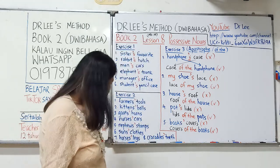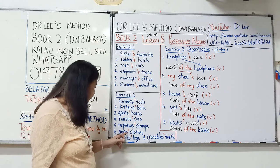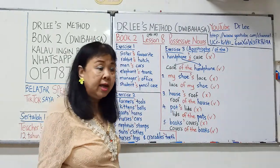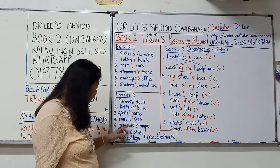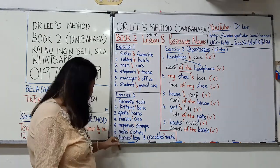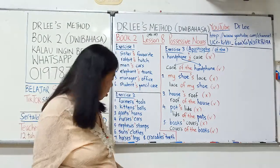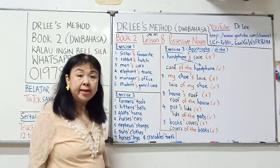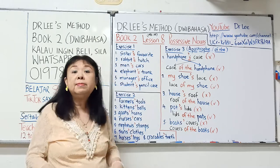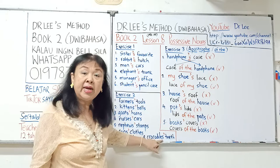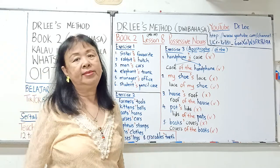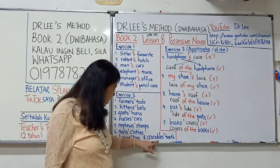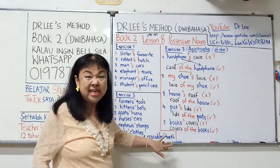'Your sons' clothes are in the wardrobe.' Anak-anak lelaki punya baju. 'My nephews' stamps are in the album.' Anak-anak saudara lelaki punya — punya itu apostrophe. 'The horses' legs are very strong.' Horses banyak kuda, jadi apostrophe di belakang S. Kalau apostrophe di hadapan S maksudnya satu; kalau di belakang S maksudnya banyak. 'The crocodiles' teeth are very sharp.' Buaya-buaya punya gigi.